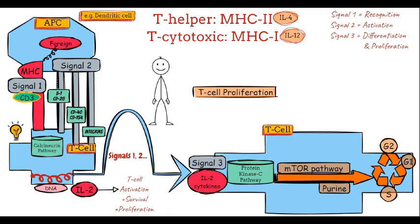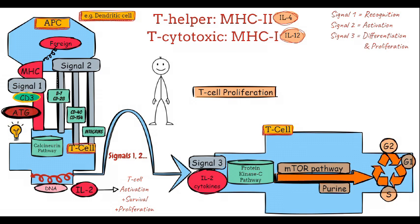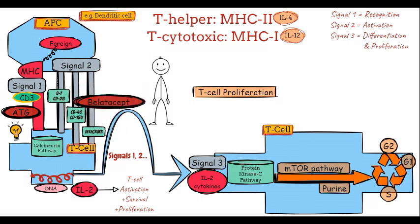To sum up: signal 1 involves the recognition of the antigen through the T-cell receptor, CD3, and the MHC complex — this step is blocked by the induction agent antithymocyte globulin. Signal 2 ensures proper activation through co-stimulatory molecules like CD40 and CD154, or CD80 and CD86, which are inhibited by belatacept. The calcineurin pathway, activated during signal 2, can be blocked by calcineurin inhibitors like tacrolimus or cyclosporin.